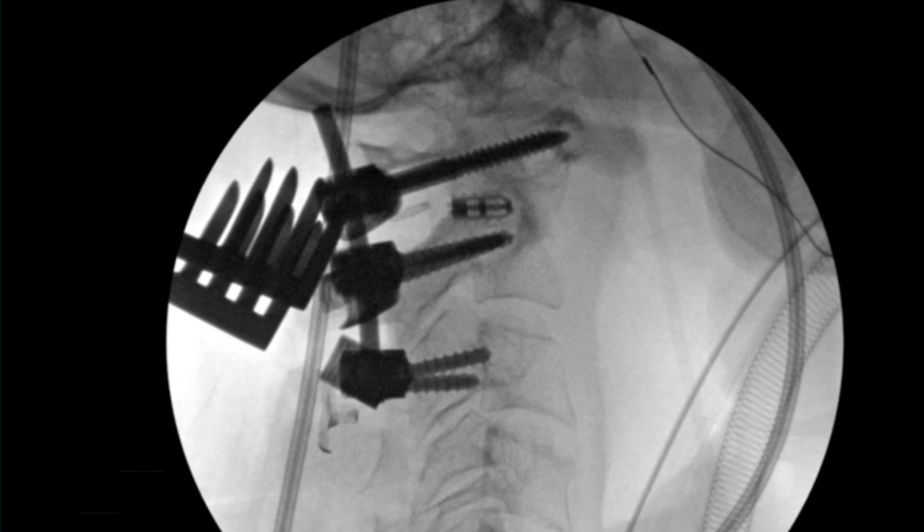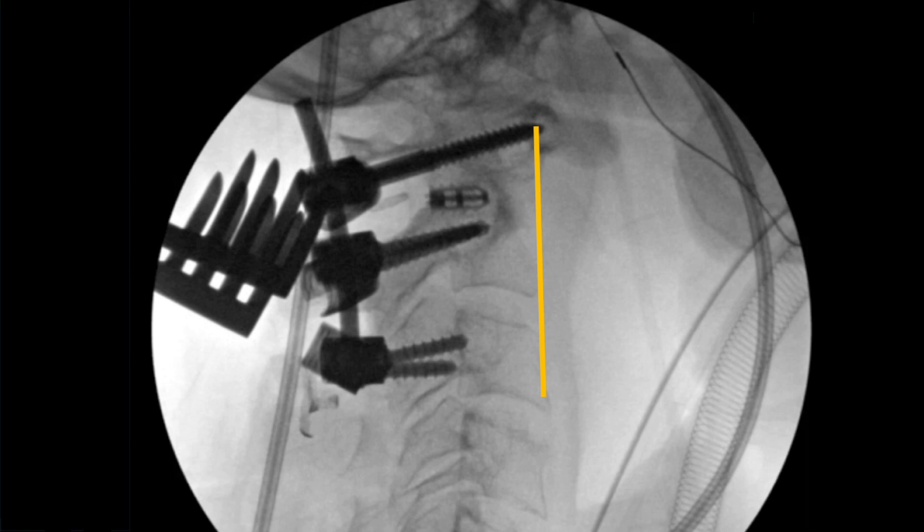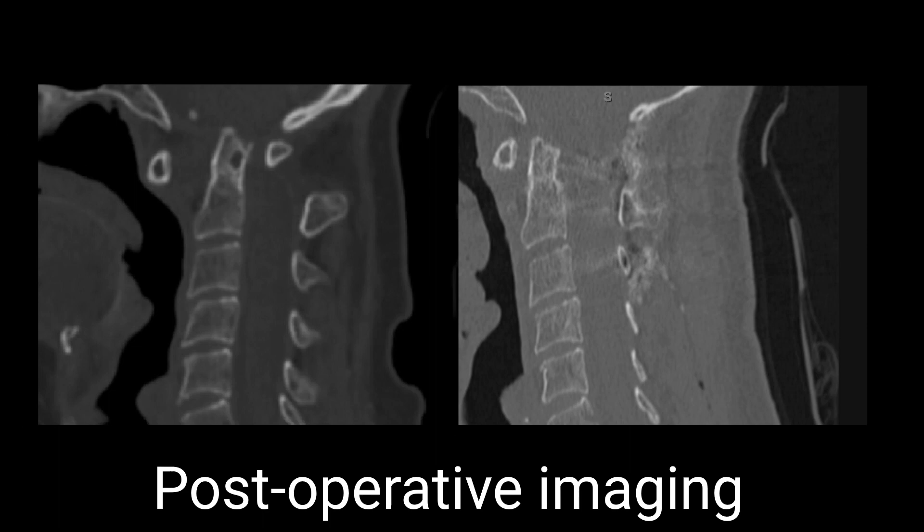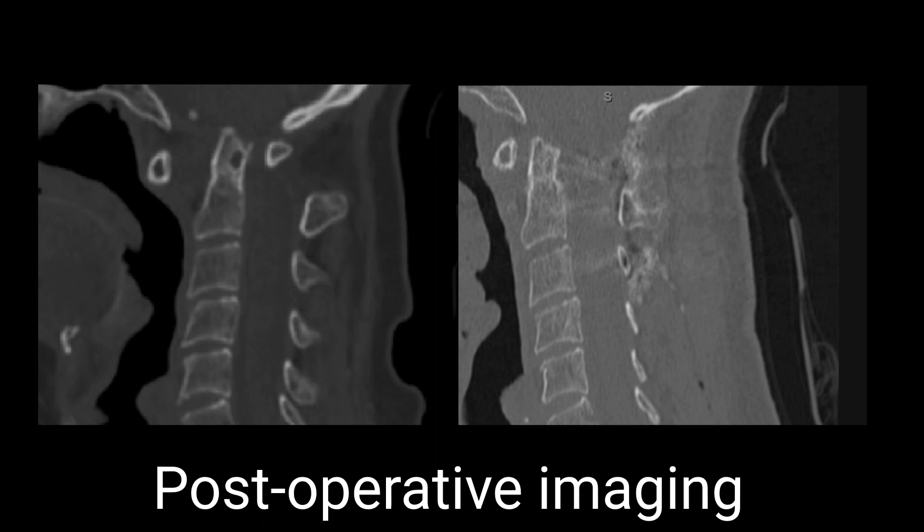Fluoroscopic imaging confirmed reduction as defined by the relationship of the C1 anterior tubercle with respect to the C2 vertebral body. A multi-layer fascial closure with dissolvable sutures followed by skin staples was performed. The patient remained at her neurological baseline and was ultimately discharged home.